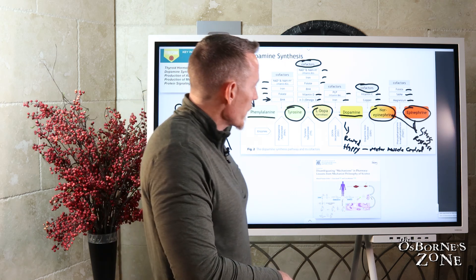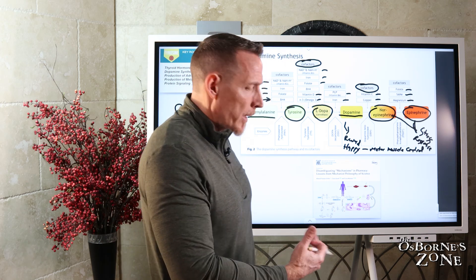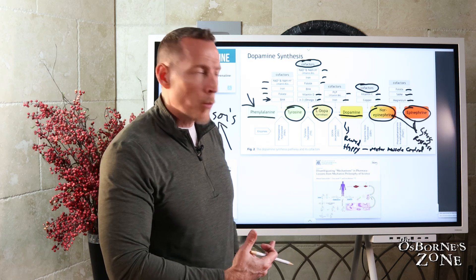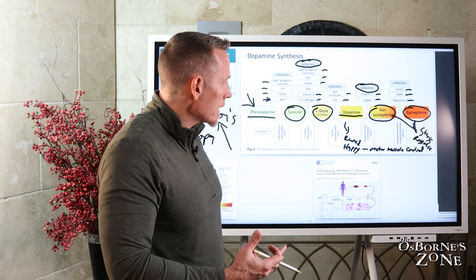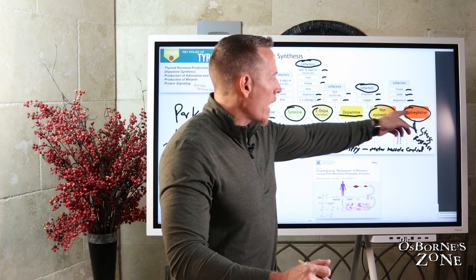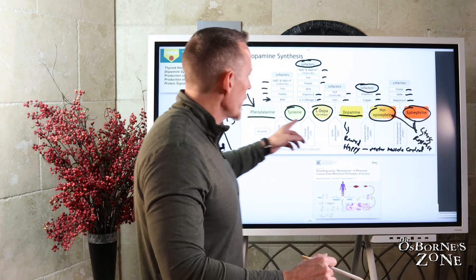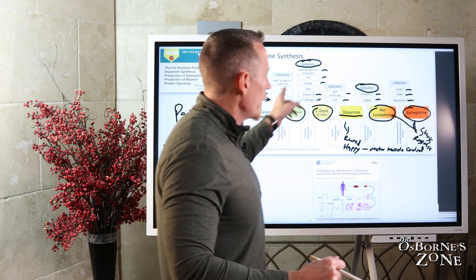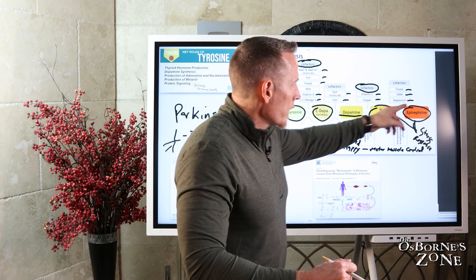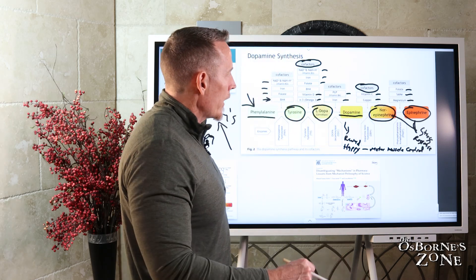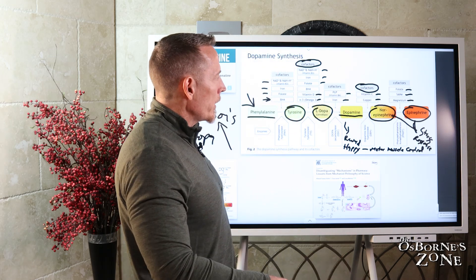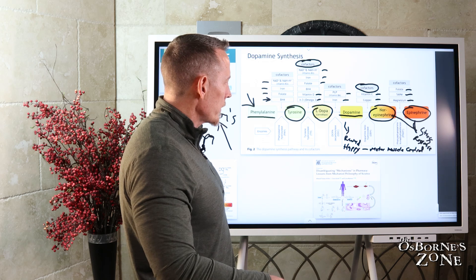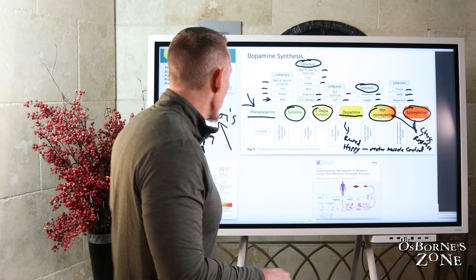A lot of people, especially with chronic inflammation, develop an inability to cope or adapt to stress. This is one of the reasons why — they've burned through these nutrients and are left with an inability to make stress hormones effectively, so they don't deal with stress well.